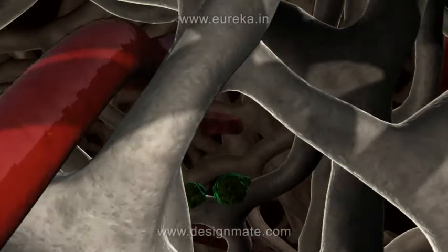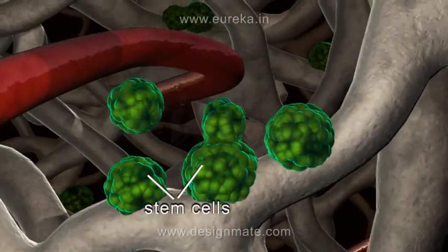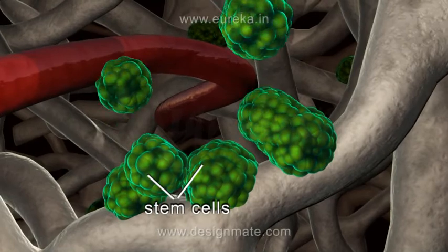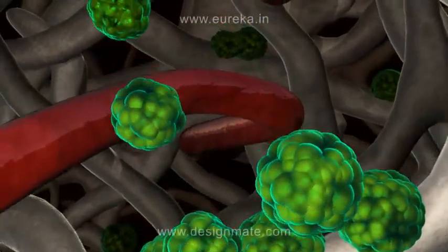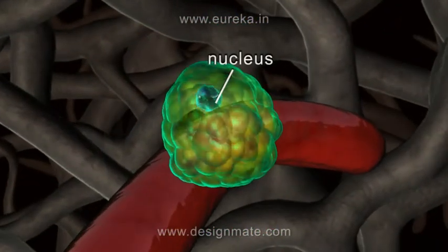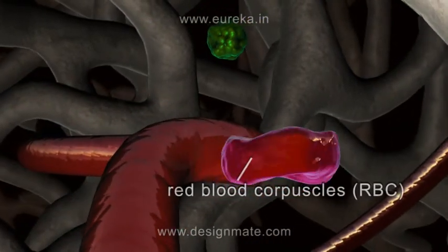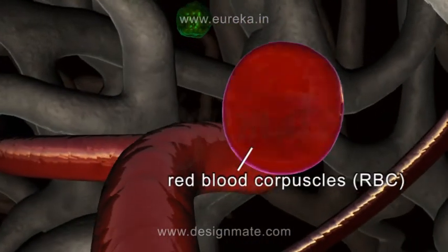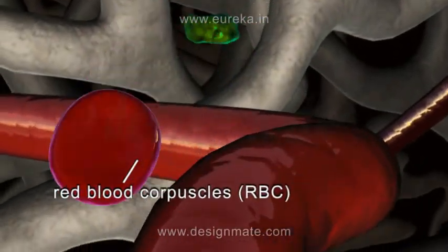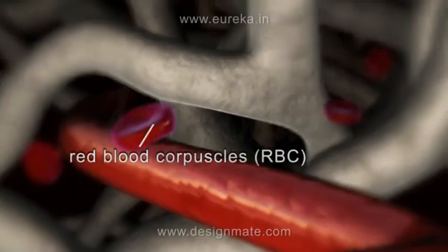We also observe some stem cells which can divide and re-divide to form numerous stem cells. These cells then lose their nucleus and get transformed into red blood corpuscles. One of the major functions of the bone marrow is to produce RBCs.